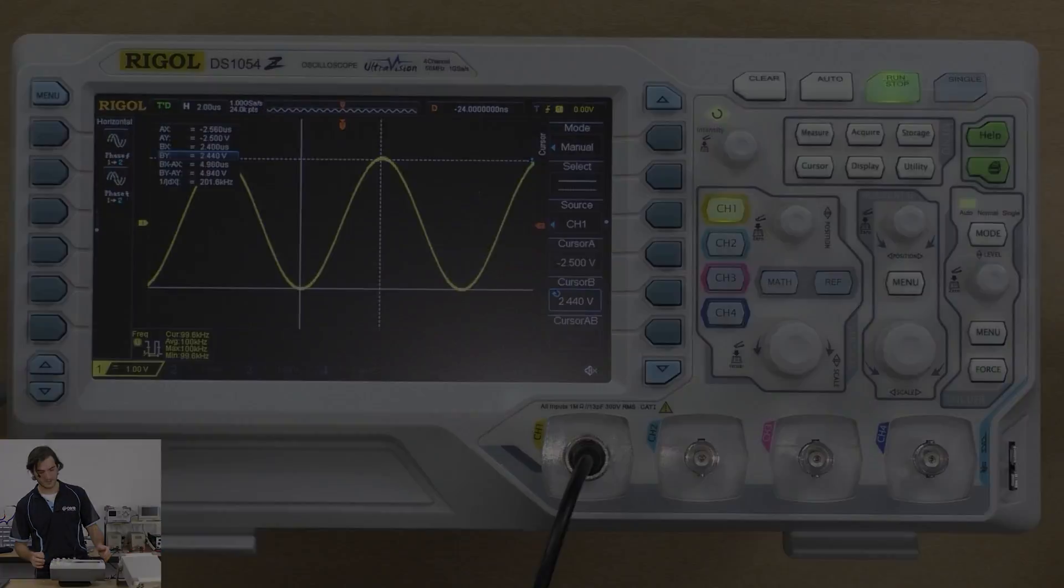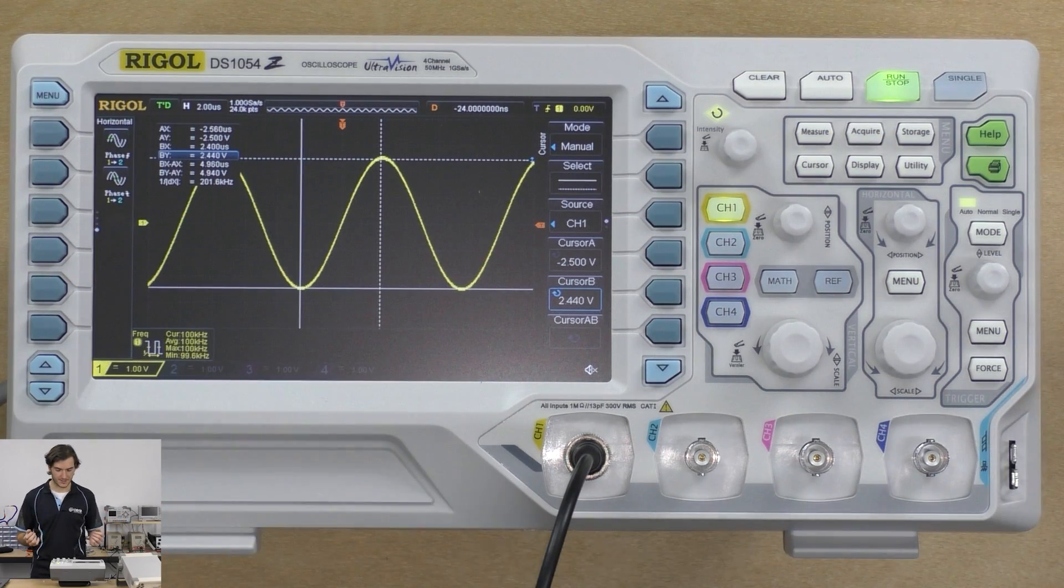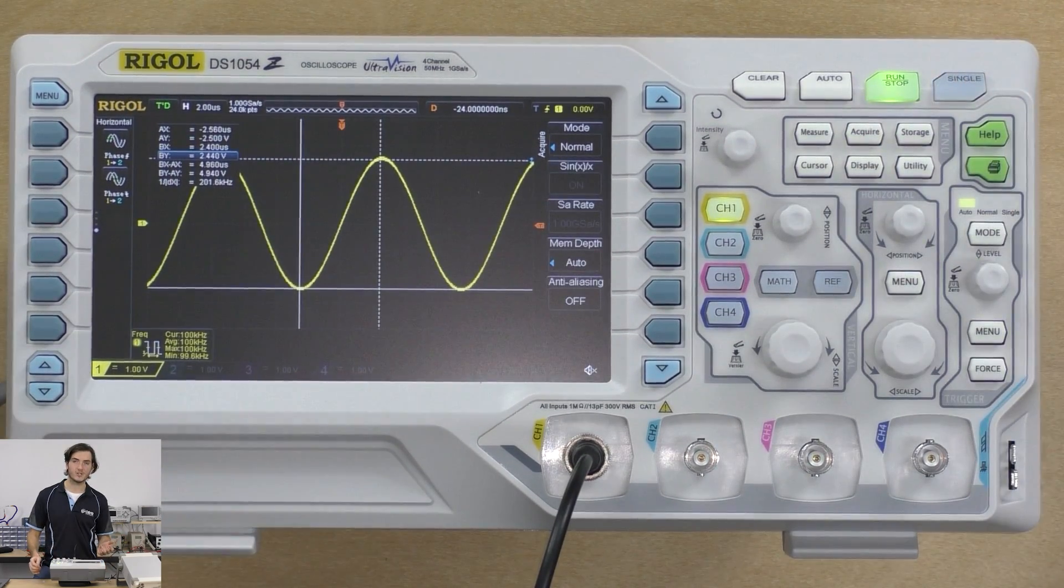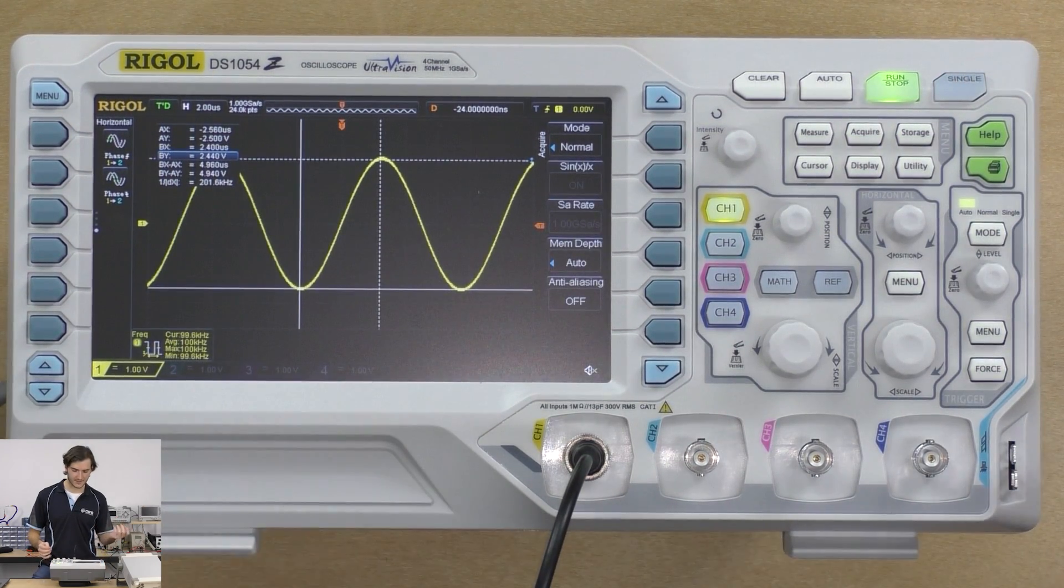Very quickly we'll look at some of the utilities. If we go over to the acquire menu, this is where we change things like how signals are acquired.